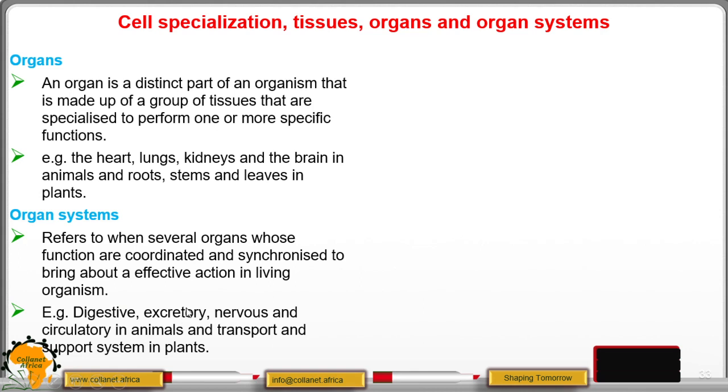We have the excretory system consisting of the kidney, the bladder, among other parts. The nervous system contains the nerves, as we had seen earlier, the nerve cell, the brain, spinal cord, among those. So they are made up of those parts or organs so that they are coordinated to bring about an effective action in living organisms.